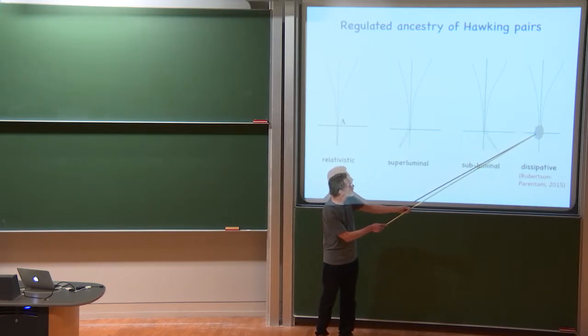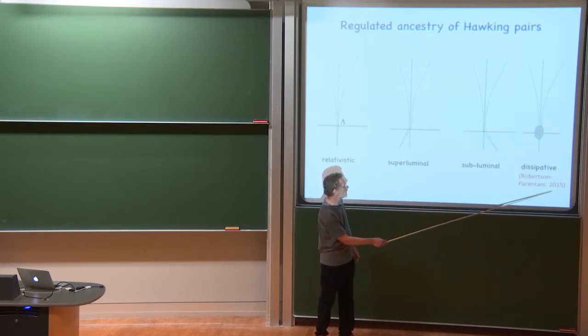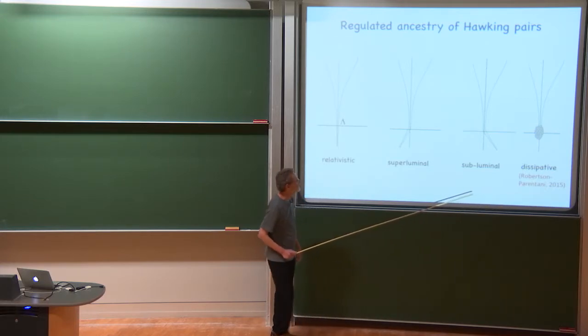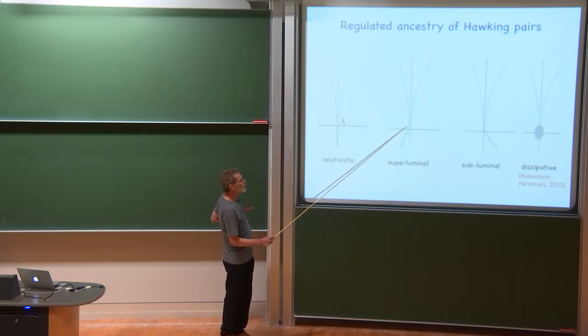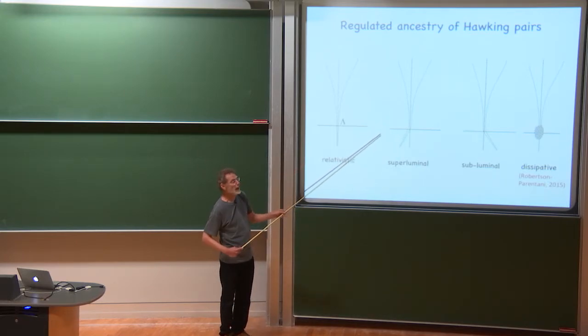A model describing precisely that process using linear field theory was worked out recently by Robertson and Parentani. And finally, in the superluminal case, well, then the mode, if it blue-shifts enough, its group velocity gets high enough that it can scoot out across the horizon and escape from the black hole.